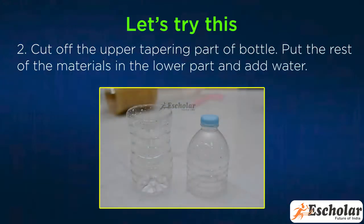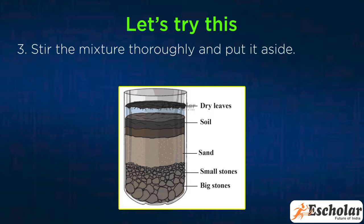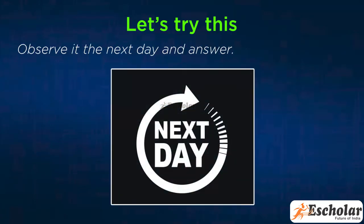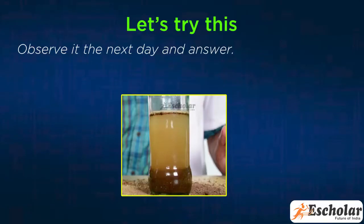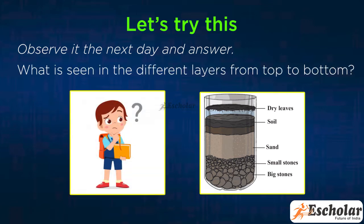Second, cut off the upper tapering part of the bottle. Put the rest of the materials in the lower part and add water. Third, stir the mixture thoroughly and put it aside. Observe it the next day and answer: How does the mixture in the bottle look now? Do you see layers in it? What is seen in the different layers from top to bottom?